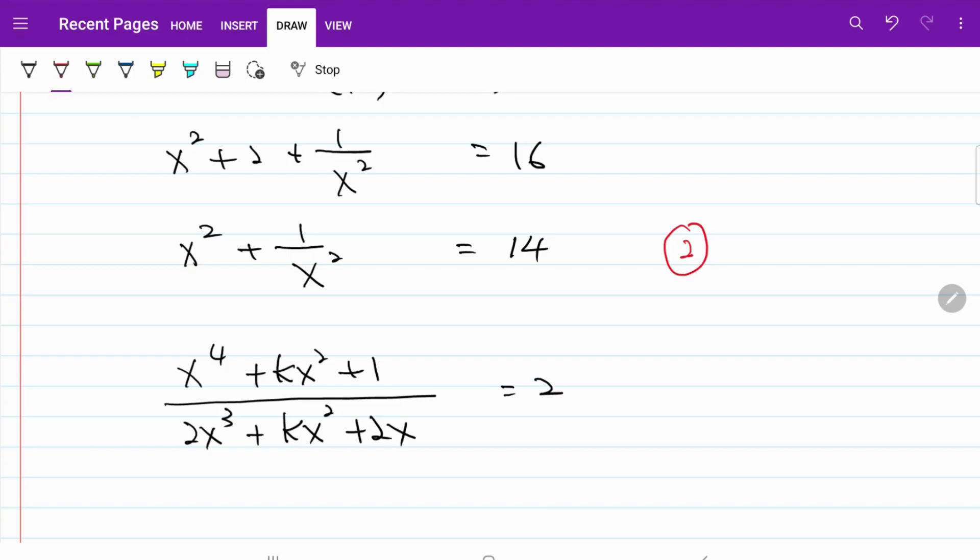Remember in the beginning of the video, we mentioned that we are trying to get rid of x squared, for which k is the coefficient. So in order to do that, let's go ahead and try to divide both the numerator and the denominator by x squared. So I'm just going to multiply both sides by 1 over x squared and see what we come up with.